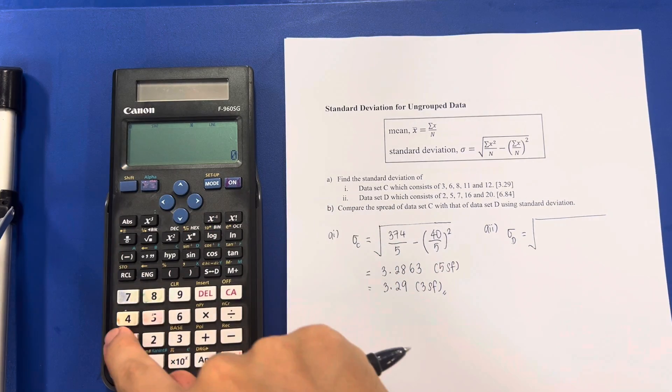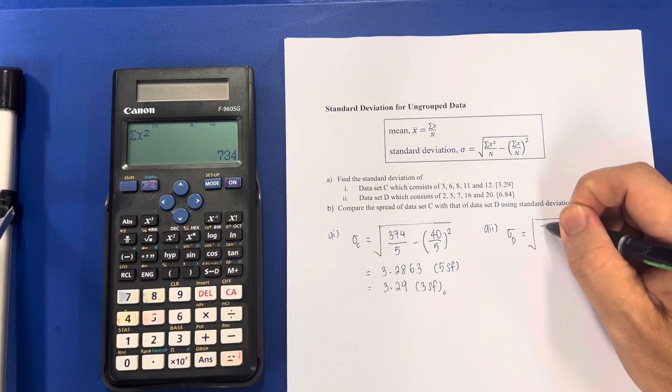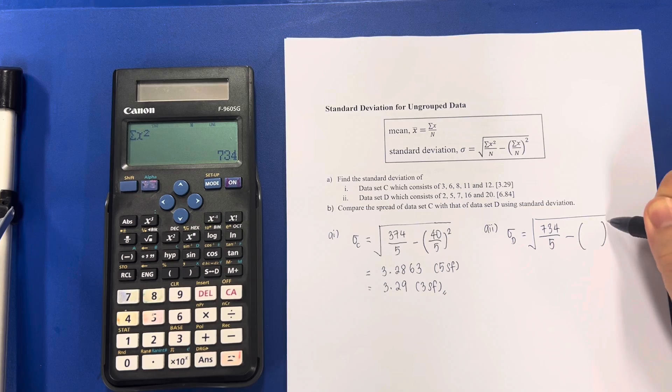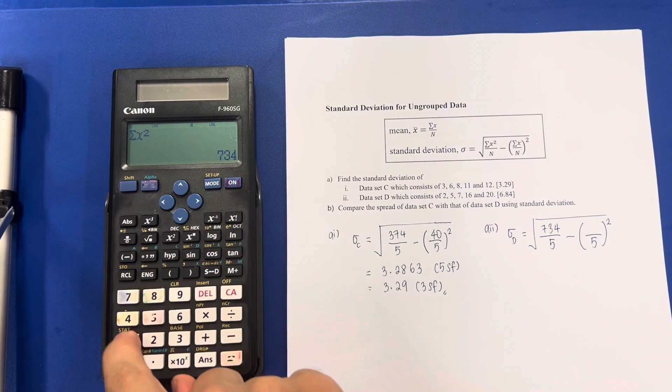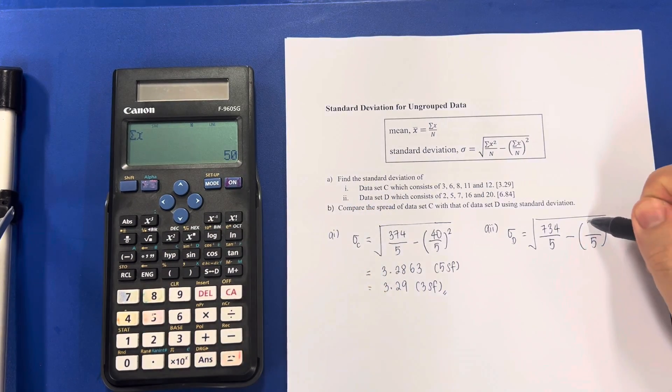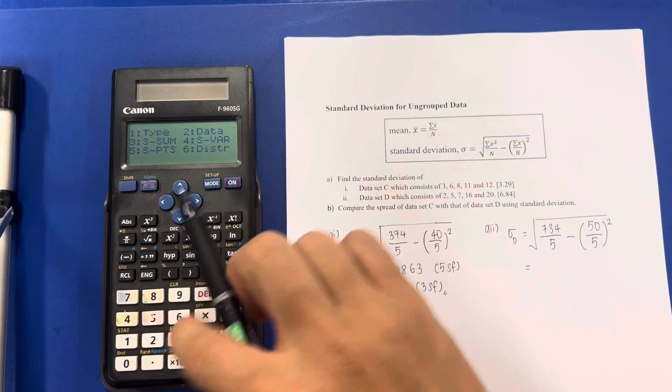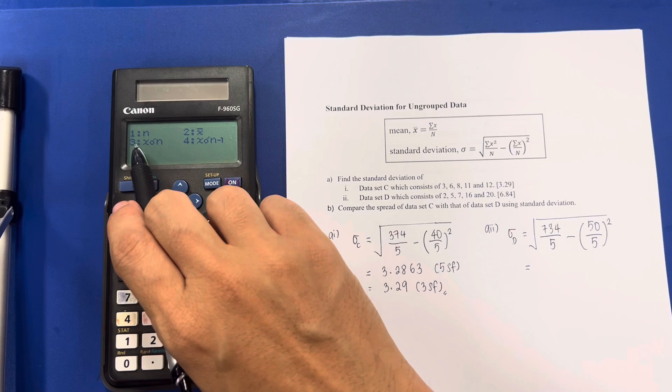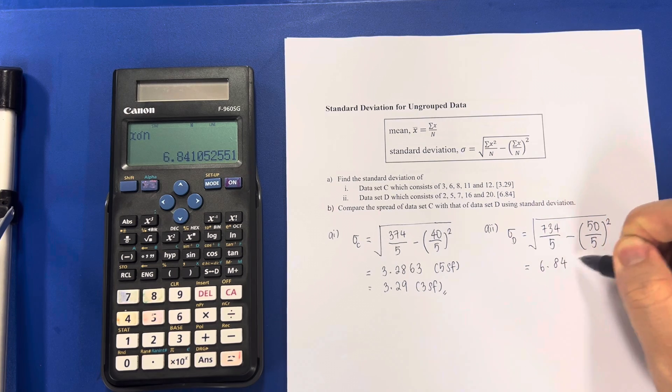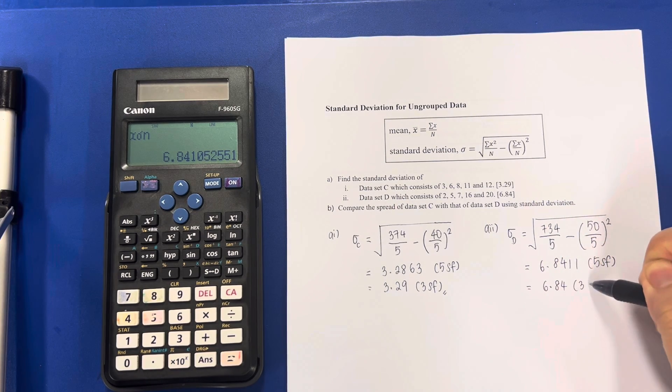SHIFT. 1. 3. 1. I will get 734. Again, I know this is 5 because there's only 5 numbers. Minus something bracket square. And this number would be SHIFT 1 again. Number 3. And there. Press the 2. 50. Then SHIFT 1 again. Number 4 is all the variance. Number 3. Button number 3 will give me my standard deviation of 6.8411, 5 significant figures. 6.84, 3 significant figures.